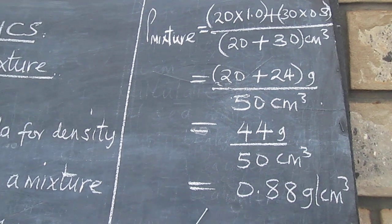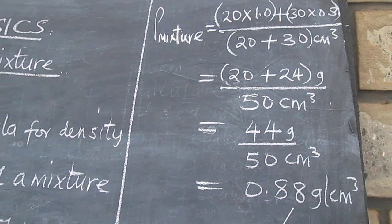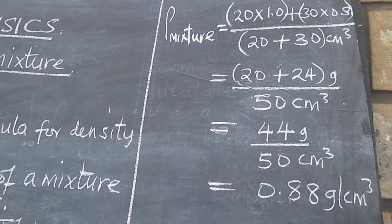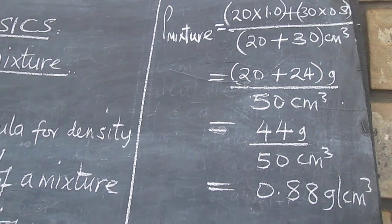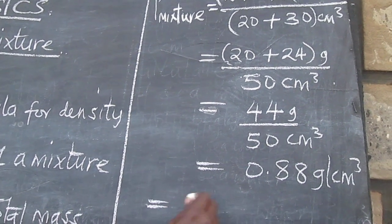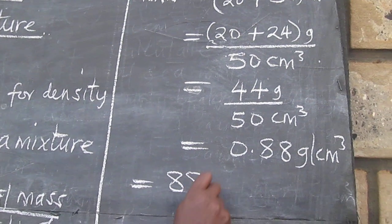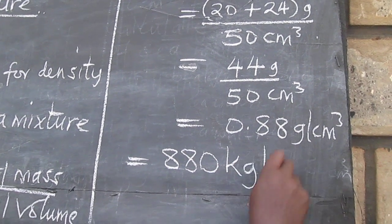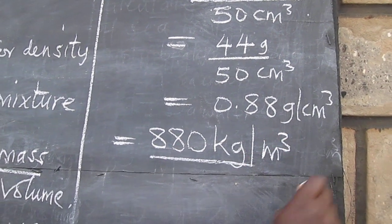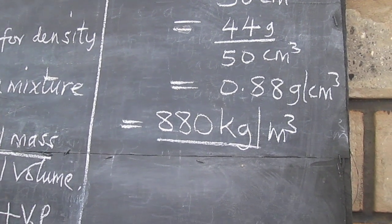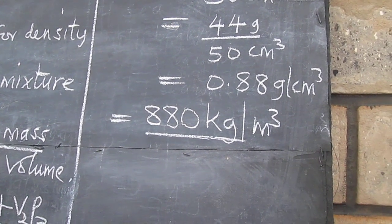When that one is simplified, it comes to 0.88 gram per cubic centimeter or in standard units, 880 kilogram per meter cubed.